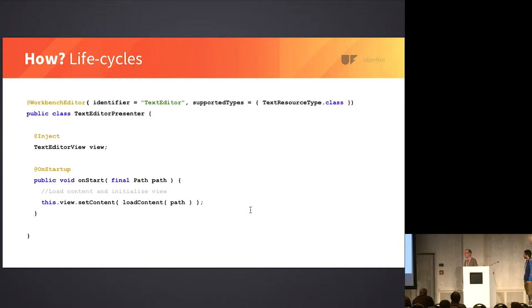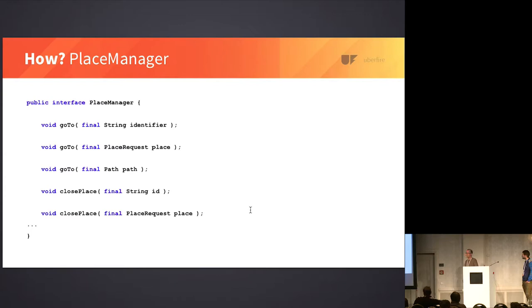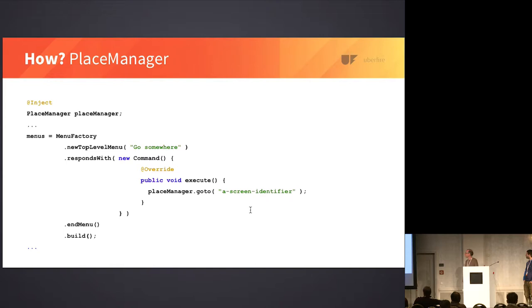The place manager: all screens, editors, and perspectives have an identifier. We can use the place manager to go to that identifier, which instructs the workbench to load that screen in one of the panels. You can also request a place — a class that lets you provide extra parameters to the request. A PlaceRequest includes any custom parameters you want to pass that aren't available on the path. You can also go to a path directly as a convenience method, and close places programmatically. Here's a brief example: build a menu, go somewhere, it responds with a command, and we use placeManager.goTo() with the identifier for that screen.